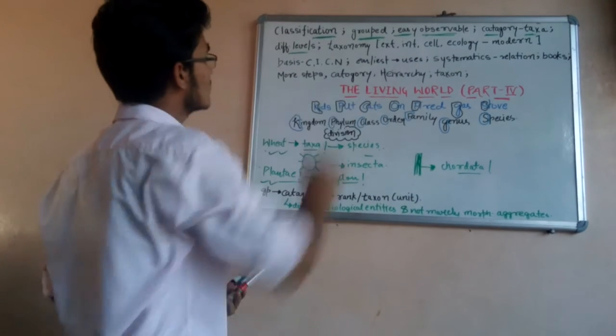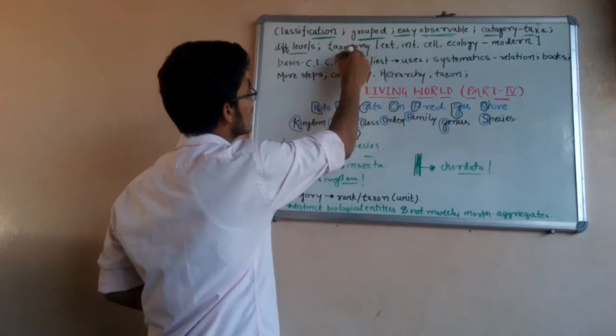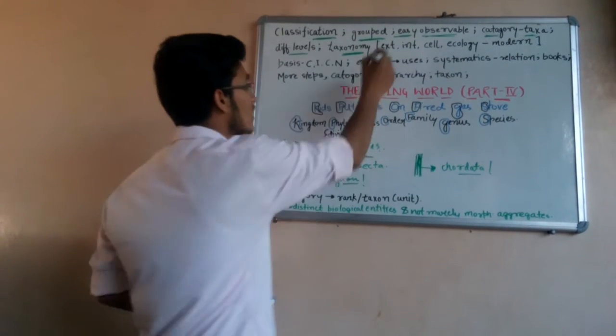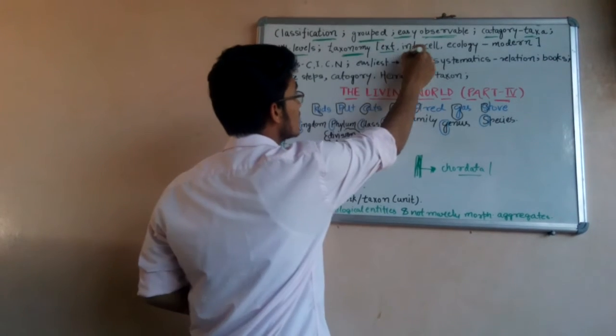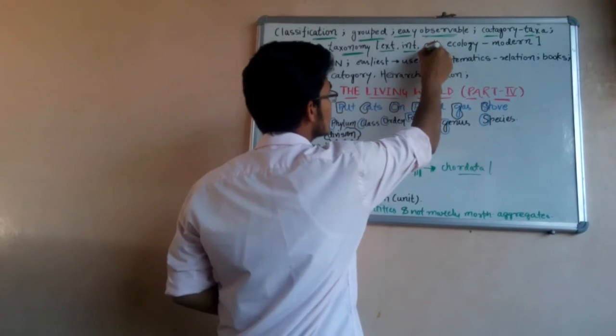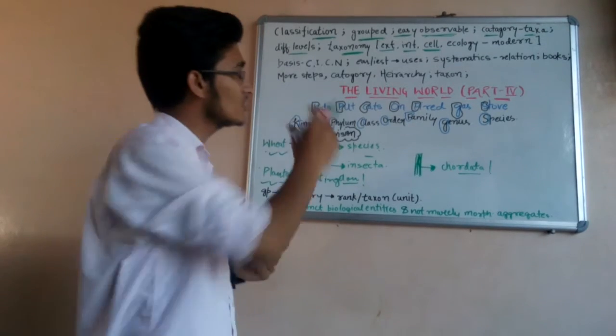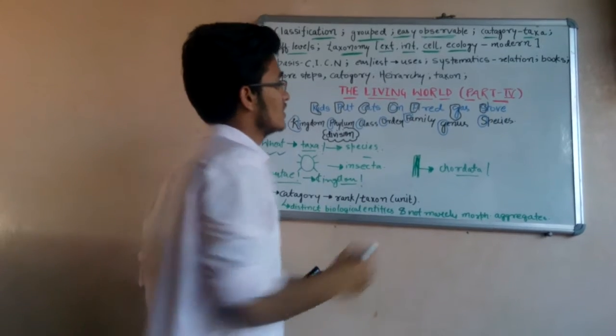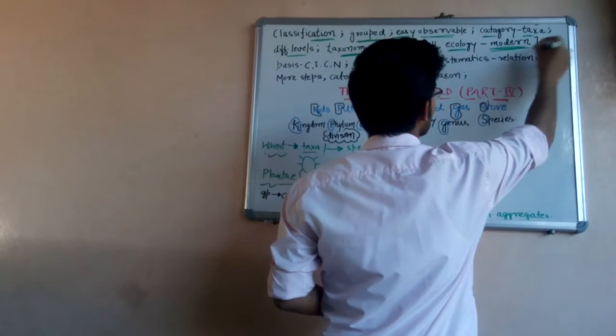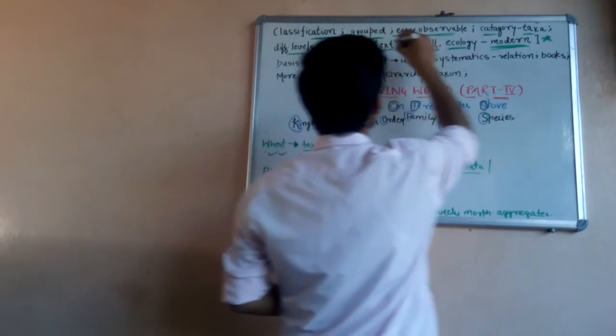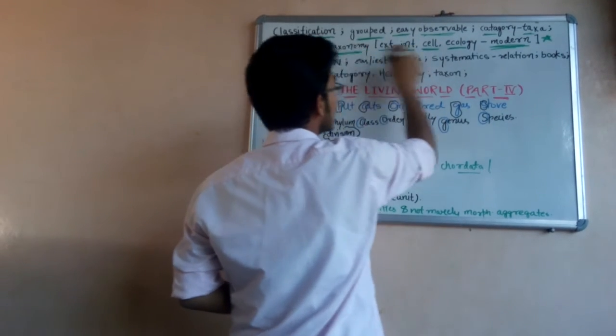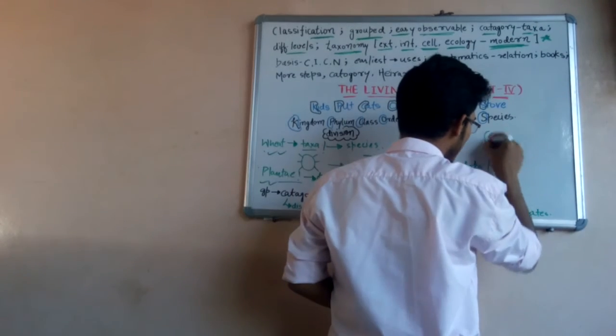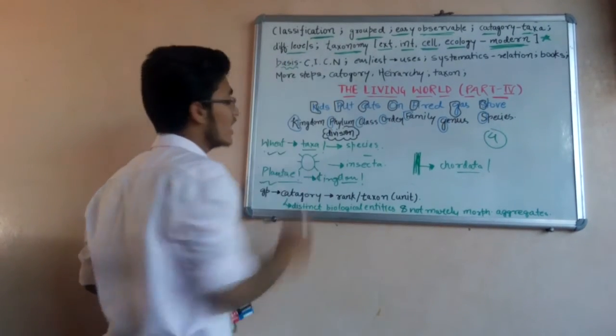Taxonomy is another feature. Taxonomy is also a kind of grouping of organisms based on external structure (morphology), internal structure (anatomy), cell structure, and their ecological relationships. This is a very important line: these are the basis of modern taxonomy.